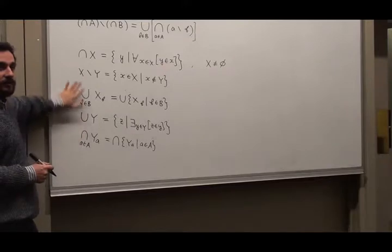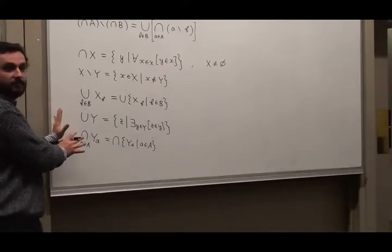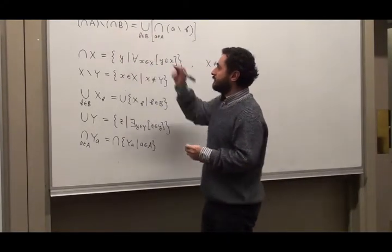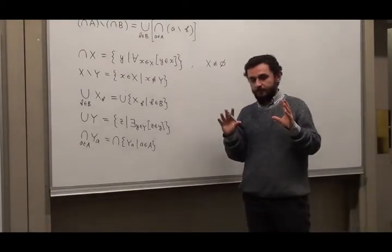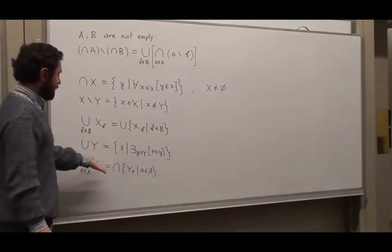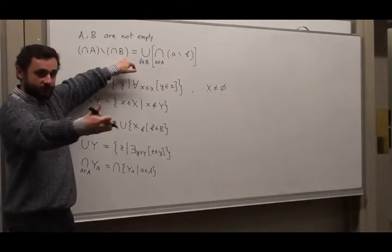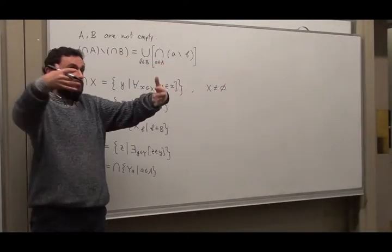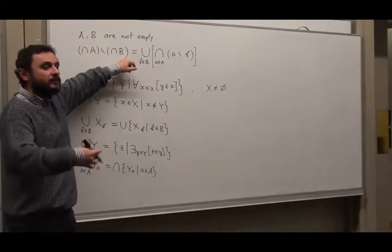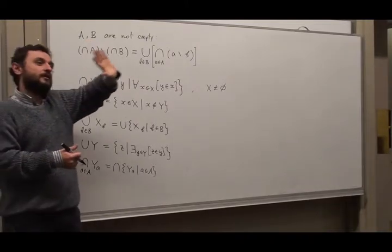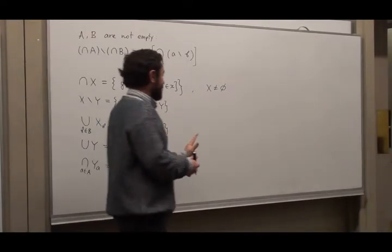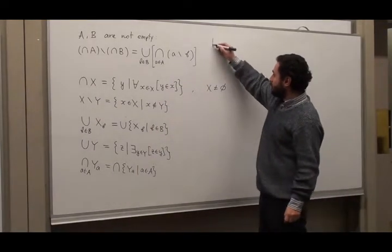There are two ways we could approach this. One is to use the definitions and compute the left-hand side to its simplest form, then the right-hand side, and compare. Another way is to pick an element of the left-hand side and analyze what it means for something to be an element of each side. We could do either computation or analysis — or both, which may be more illustrative.